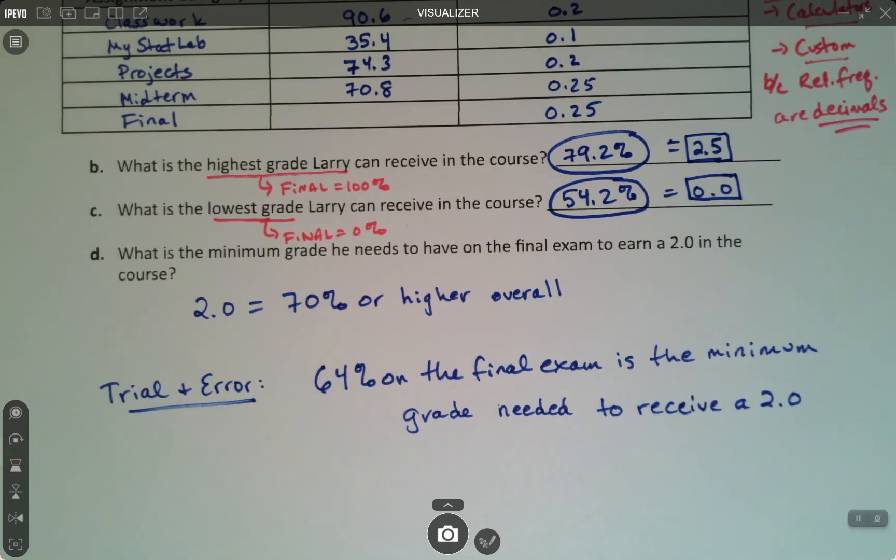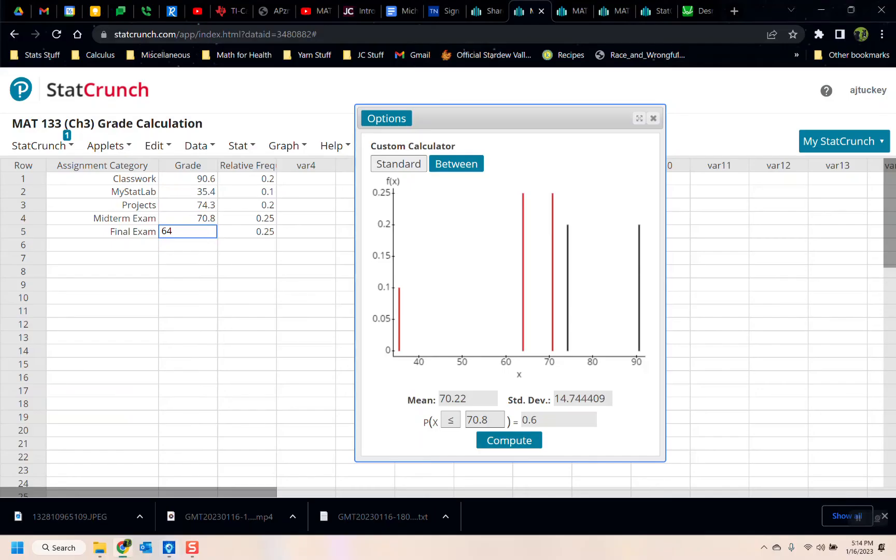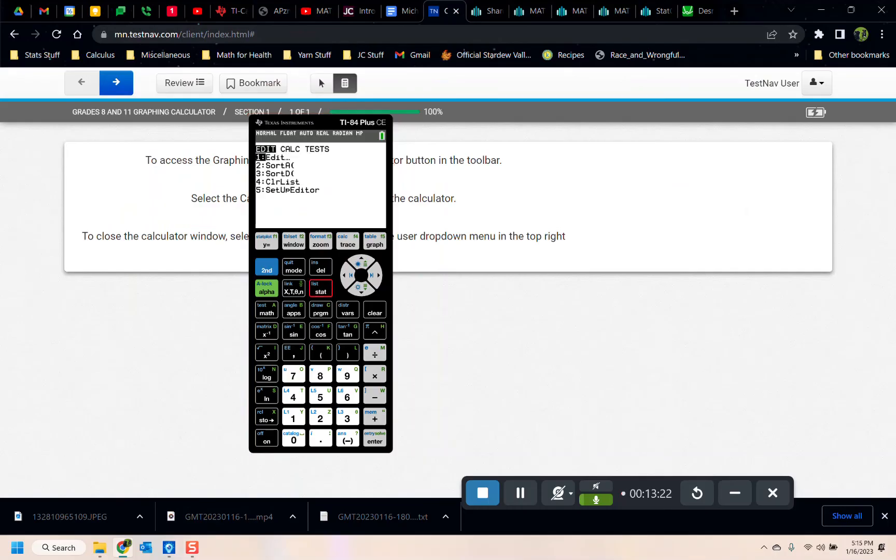I'm going to briefly touch on this with a TI-84. But if you're not using a TI-84, you can just skip ahead to the next video. TI-84s, you actually have, this is the one thing that a TI-84 does better than StatCrunch. So you go to Stat, Edit, you type in the values. So 90.6, 35.4, 74.3, 70.8. I'm just going to put in the 100 so we can see that.